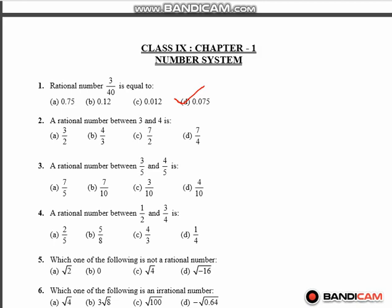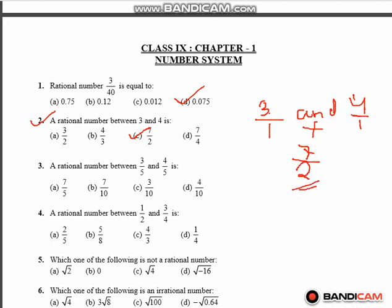Next question: the rational number between 3 and 4. We find the number. The answer will be 7 by 2, because 3 has 1 number hidden in the denominator and 4 also has 1 number hidden in the denominator. So when we add both numbers, 3 plus 4 is 7, and 1 plus 1 is 2, so the answer 7 by 2 is the correct option.